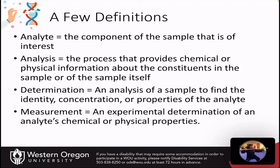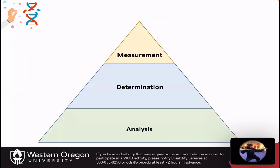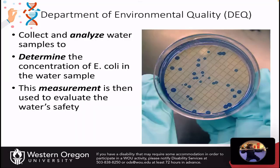These all seem a little bit similar, but they're on a hierarchical pyramid where the analysis is the base of the pyramid that you use to make a determination, and then that becomes a measurement. For example, you might collect and analyze water samples to determine the concentration of E. coli in the water sample, and a specific measurement is then used to evaluate water safety.